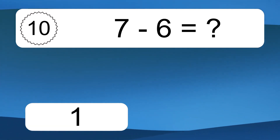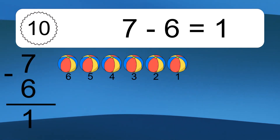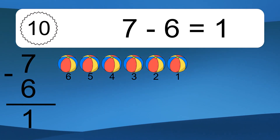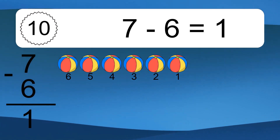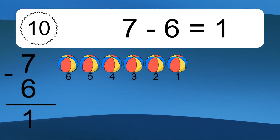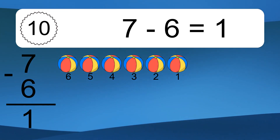7 minus 6 equals what? 7 minus 6 equals 1. Let's count it: 6, 5, 4, 3, 2, 1.